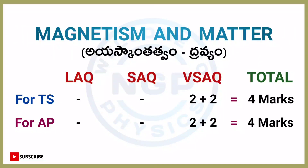Next chapter: Magnetism and Matter. For both AP and TS students, two VSAQ questions — two 2-marks questions, 2 plus 2. Chapter weightage is 4 marks.